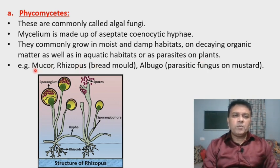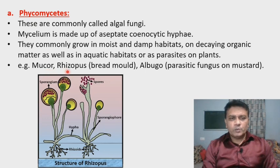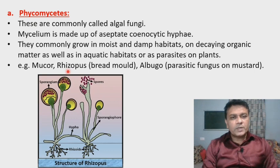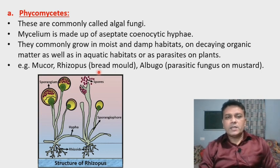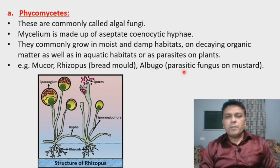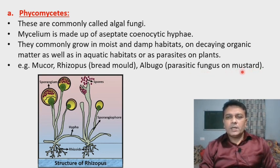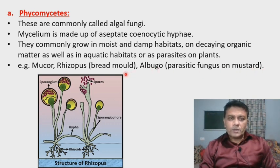Common examples are Mucor, Rhizopus, and Albugo. In this diagram we can see the detailed structure of Rhizopus, also called bread mold because it generally grows on bread. Albugo is a parasitic fungus that grows on mustard, called Mohri in Marathi.